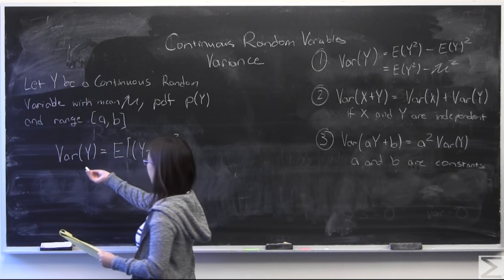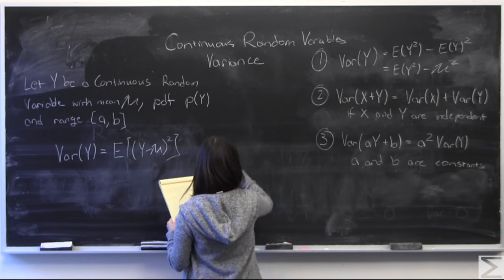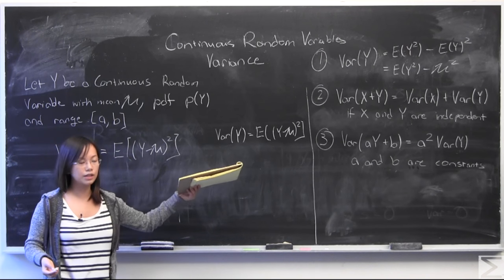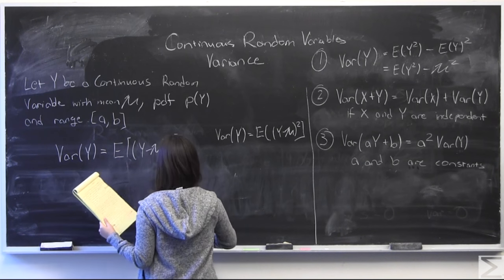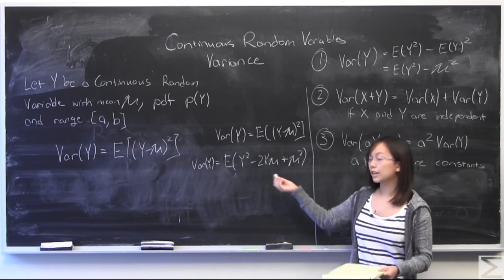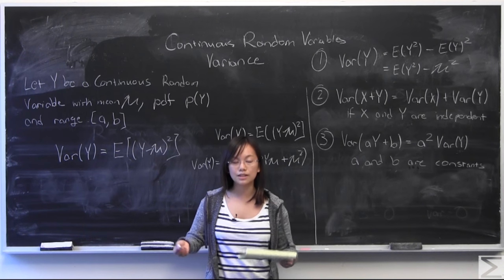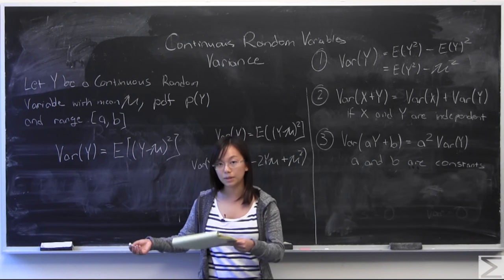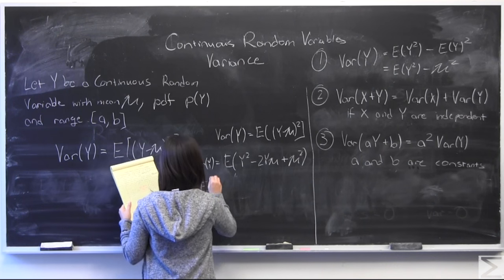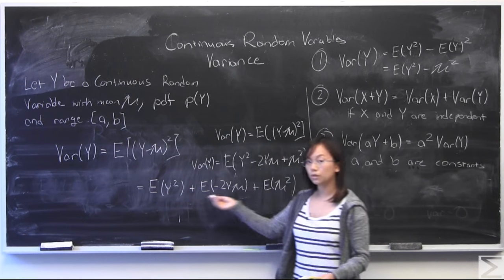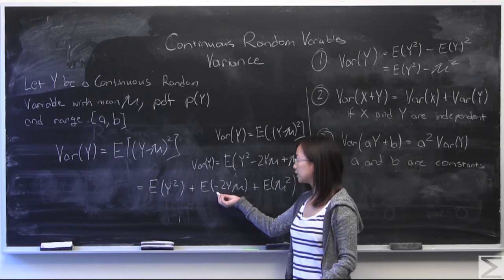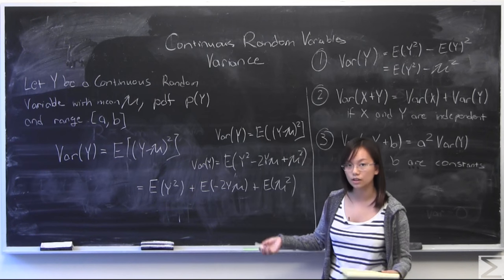I will start by using the definition of variance to derive that. I'm going to FOIL out y minus mu squared. Then I'm going to use the property of expectation value that the expectation value of a plus b is equal to the expectation value of a plus the expectation value of b. From this, another property of the expectation value is that if you have constants — and we know that mu is a constant, and negative two is definitely a constant — you can pull that out.